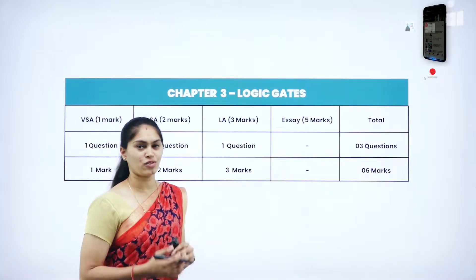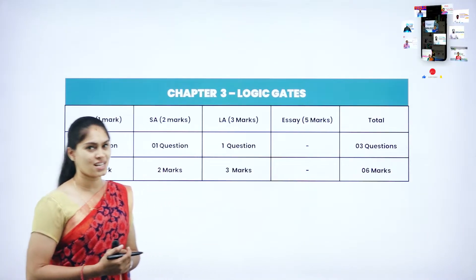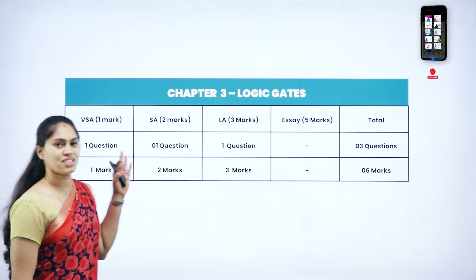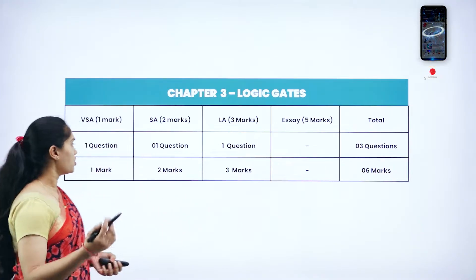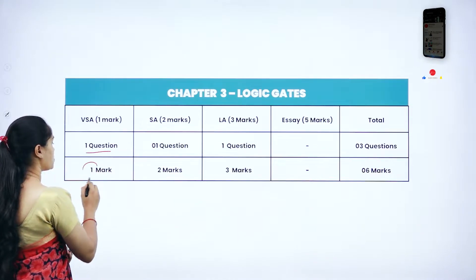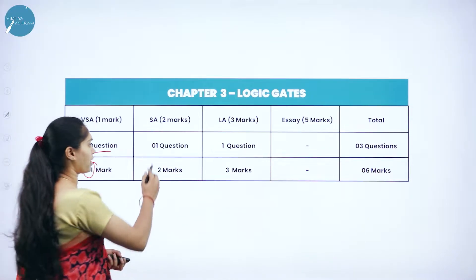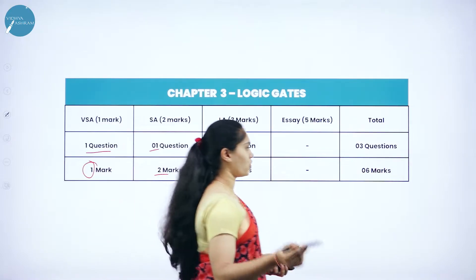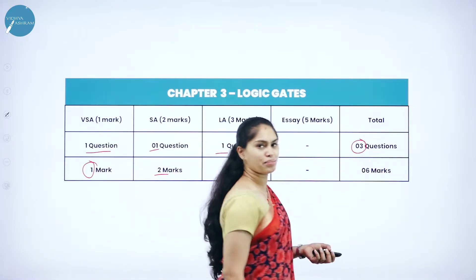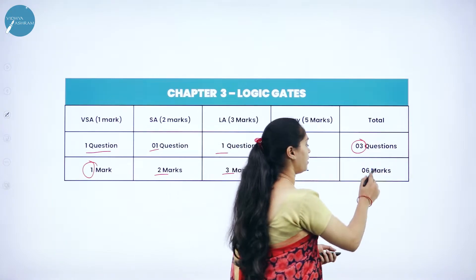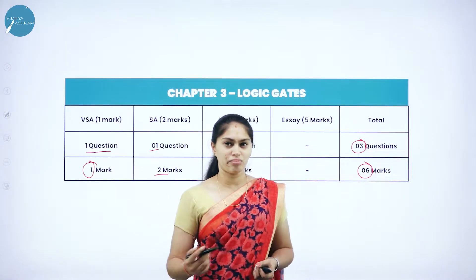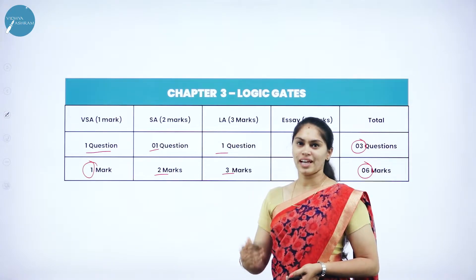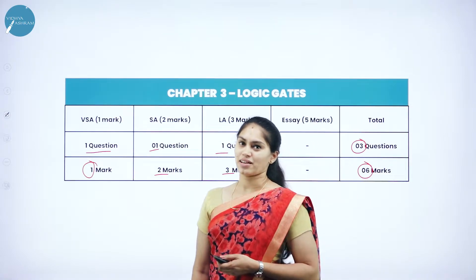Before that, we will see the blueprint, that means marks distribution of this chapter. If you see the marks distribution of Chapter 3 called Logic Gates, you are going to get one question for one mark, one question for two marks, and one question for three marks. So totally three questions from this chapter, worth six marks in total.